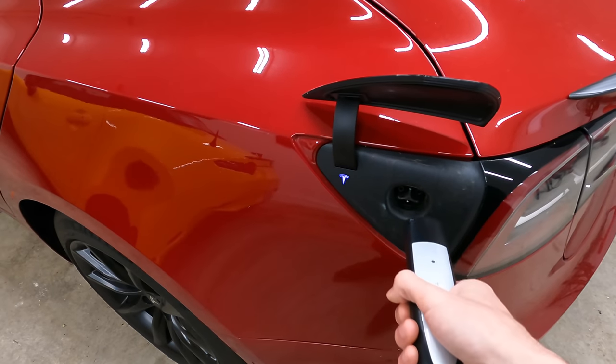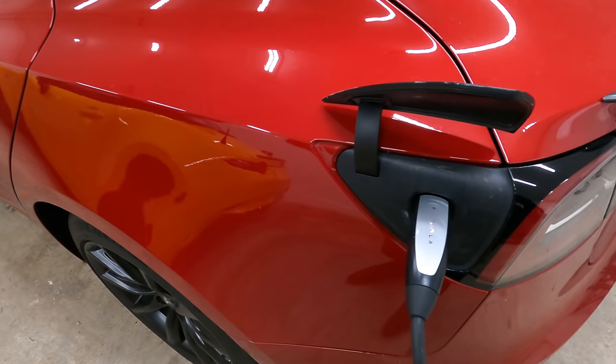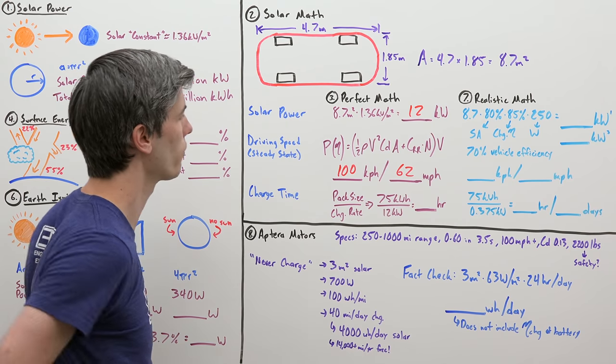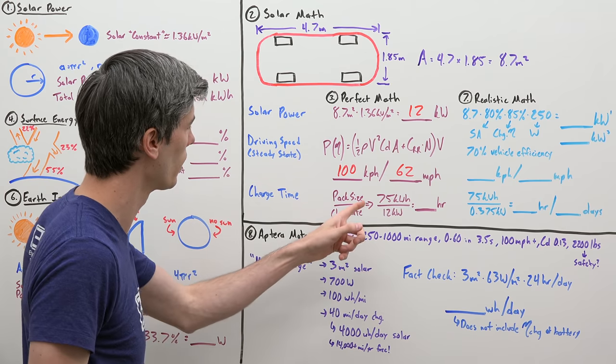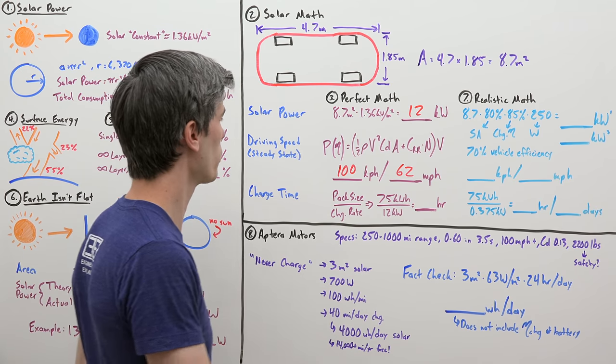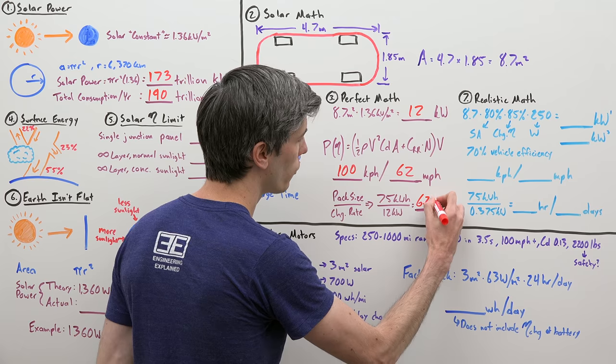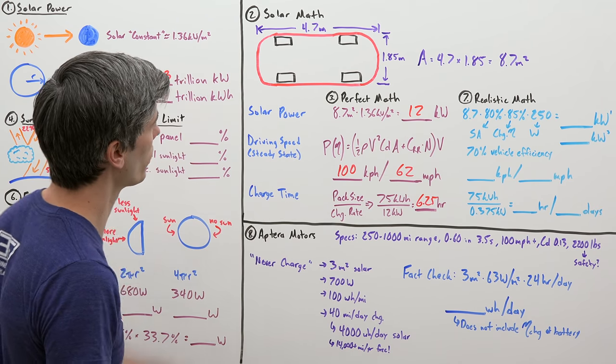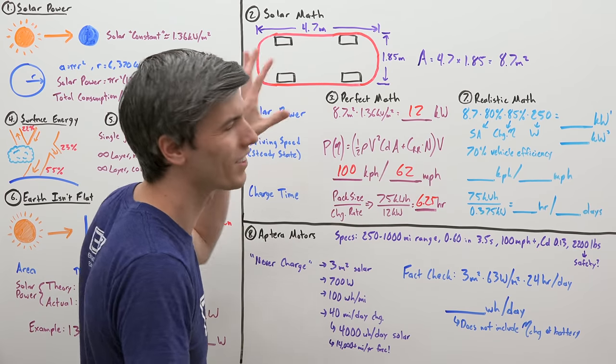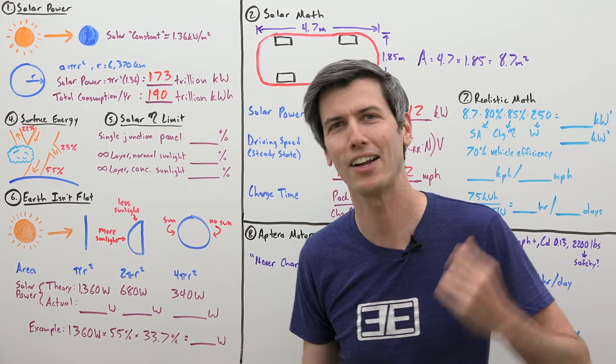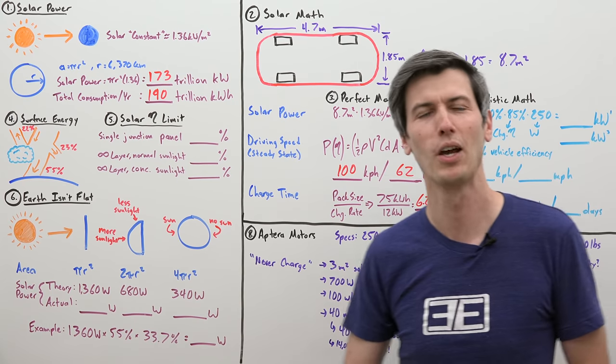So the question then is, how long would it take to fully charge that battery? So let's say we have a 75 kilowatt hour battery, we're able to charge at a rate of 12 kilowatts. Well, in the perfect world, we could charge that battery in just 6.25 hours using the surface area from the top covered in solar panels. This all sounds great. But this is an idealized world and that is not realistic.